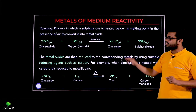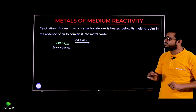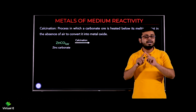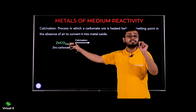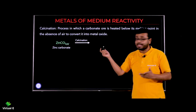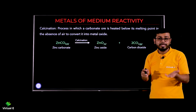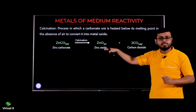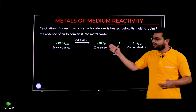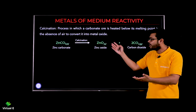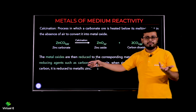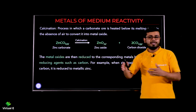Now let's discuss calcination. We have zinc carbonate (ZnCO₃). Remember, this process happens in the absence of air — no oxygen here, unlike in roasting. We heat the zinc carbonate below its melting point in the absence of air, and we get zinc oxide plus carbon dioxide. Then we use carbon as the reducing agent to remove the oxygen from zinc oxide.